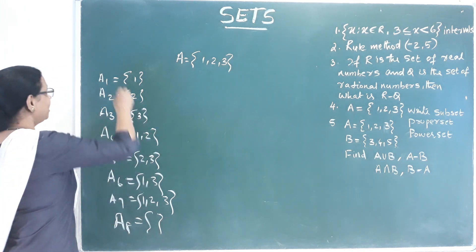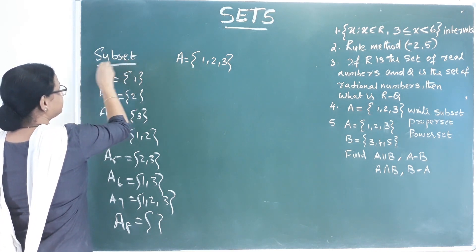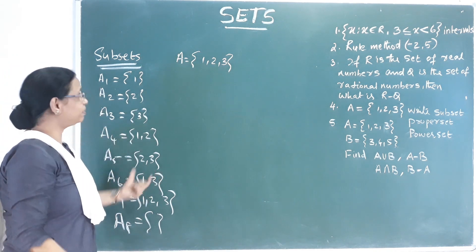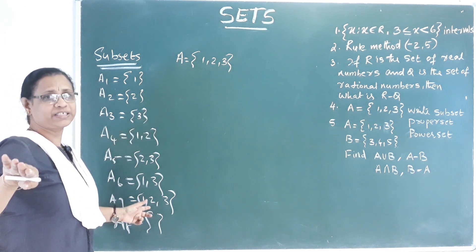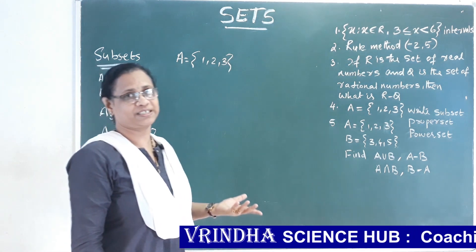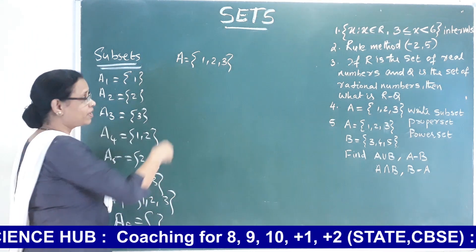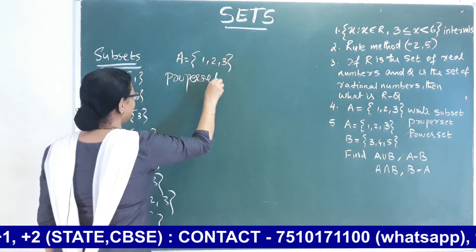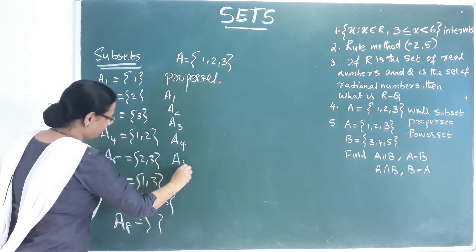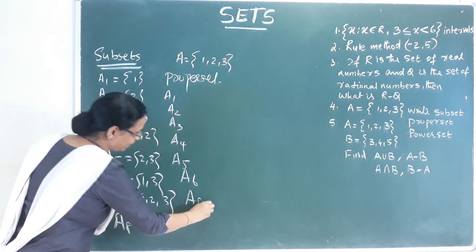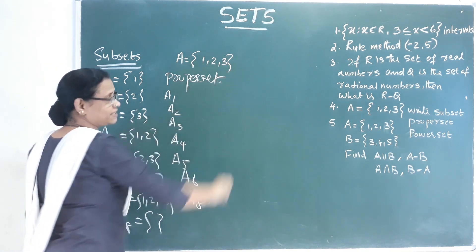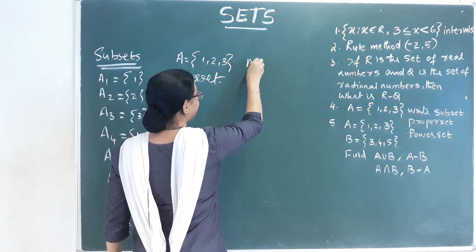There are such sets and also a name called subset. The subset of this set means this — one set, that means the same set. We have to minus this — that means it is not included, we call it proper set. If we call it proper set, we call it subset. This is proper set. All these are A1, A2, A3, A4, A5, A6, A8. That means A7 we call it proper set.